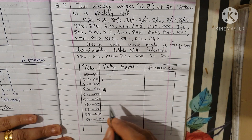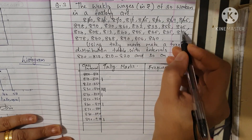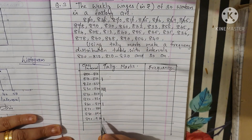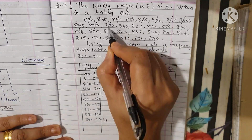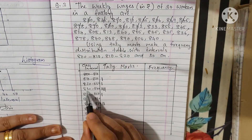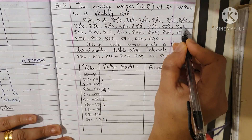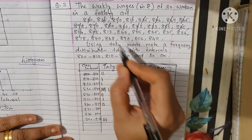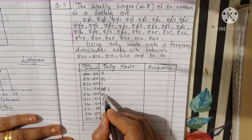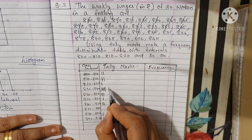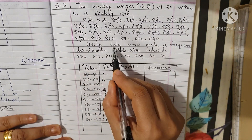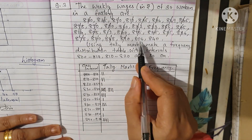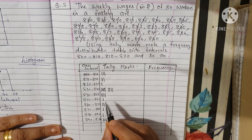For values like 845 and 898, they fall in their respective class intervals. For 890, it is the lower limit of the 890 to 900 class. Similarly, 840 is the lower limit of the 840 to 850 class.